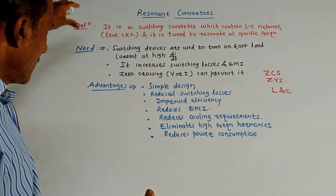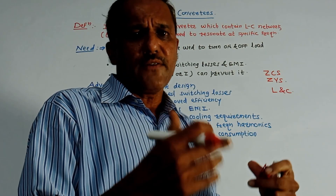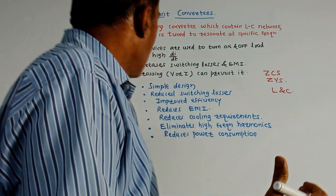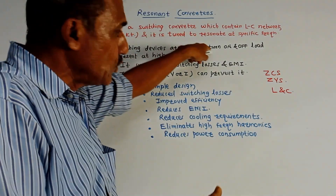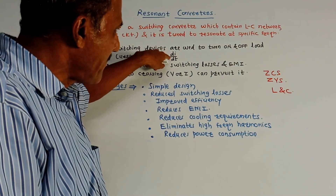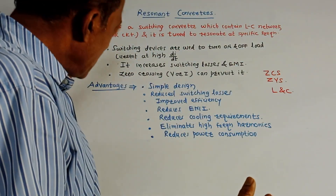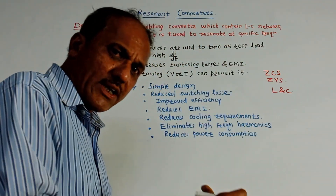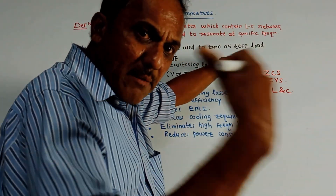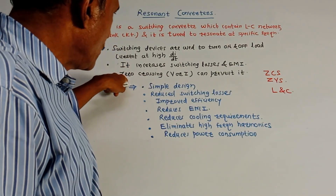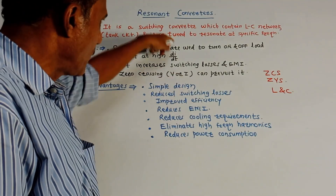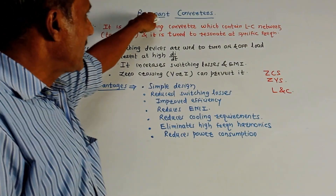Now, what is the need of resonance conversion? In earlier videos, we studied different power devices — inverters, choppers, and so on — which perform switching actions. In all such switching devices, they are used to turn on and off the load current at very high di/dt (rate of change of current). This increases switching losses as well as electromagnetic interference to neighboring devices. To avoid all these things, the zero crossing technique is used — whenever voltage or current crosses zero, switching action is performed.